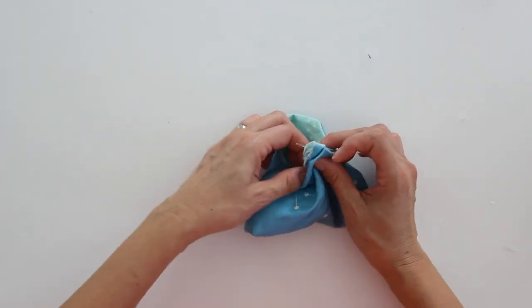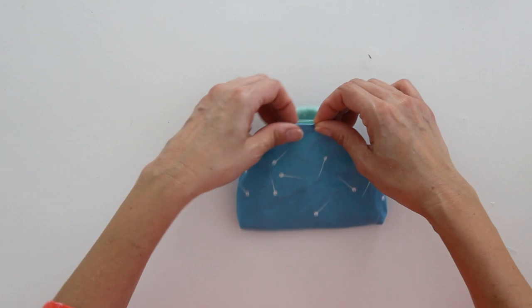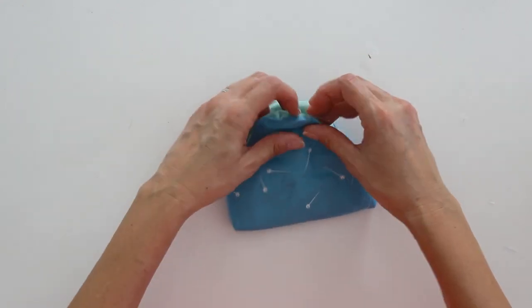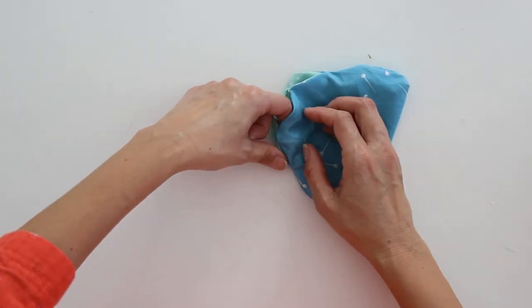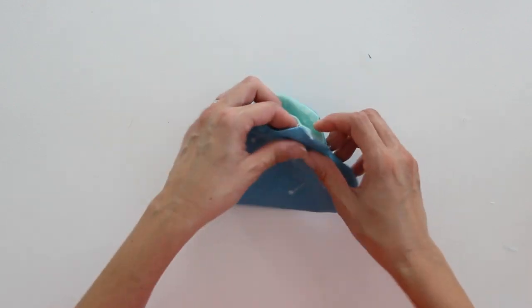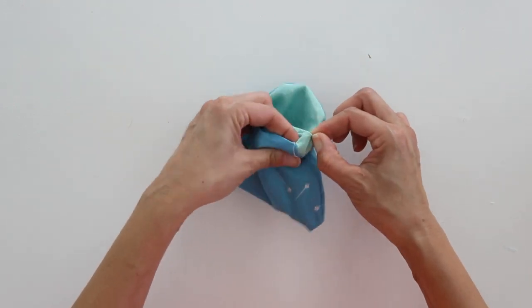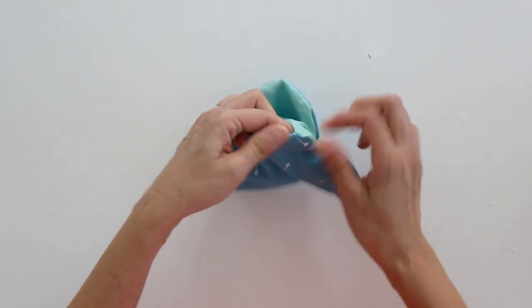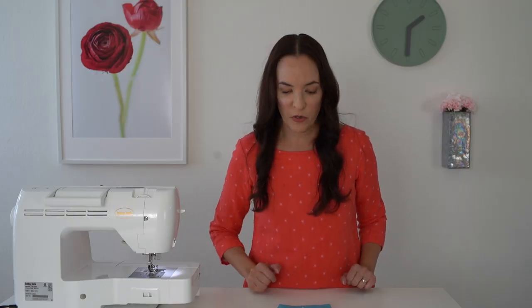Now on this side with the gap, I do want to press the two raw edges in towards each other, and those are going to get secured together when I stitch this to the frame. You can press this with an iron as well if you'd like, but I'm going to move the camera a little bit here so that you can see what I'm doing because the next part requires hand stitching.